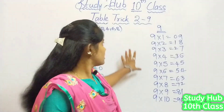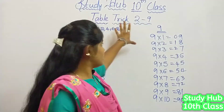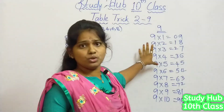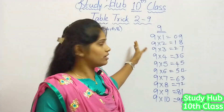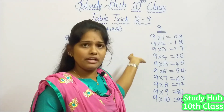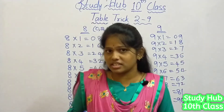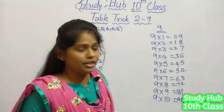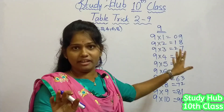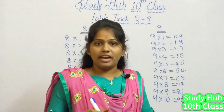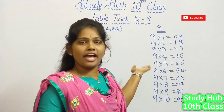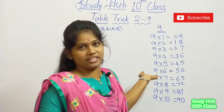Friends, these are the table tricks which we have seen in this video from 2 to 9. The remaining tables — 10 and 11 — are easy, and from 12 onwards we have already discussed in a previous video. I hope you all are clear with the multiplication tables. Thanks for watching my video. Please like, share and subscribe, friends.